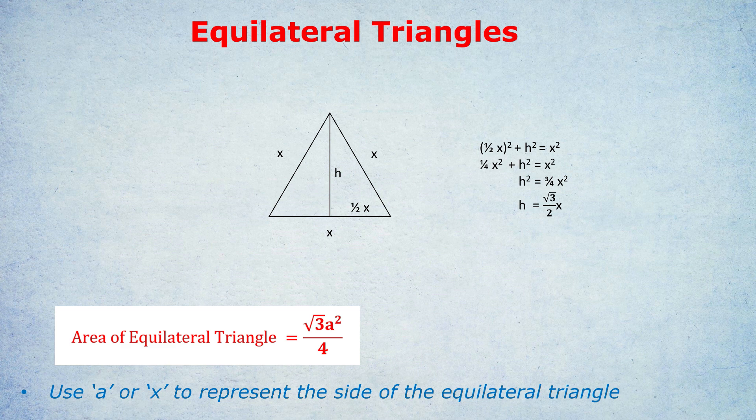So we know that the height of this equilateral triangle is root 3 over 2x. Next, we can use the formula that applies to any triangle to find the area, which is simply base times height divided by 2. We know the height of this equilateral triangle is root 3 over 2x, and we know the base is simply x.